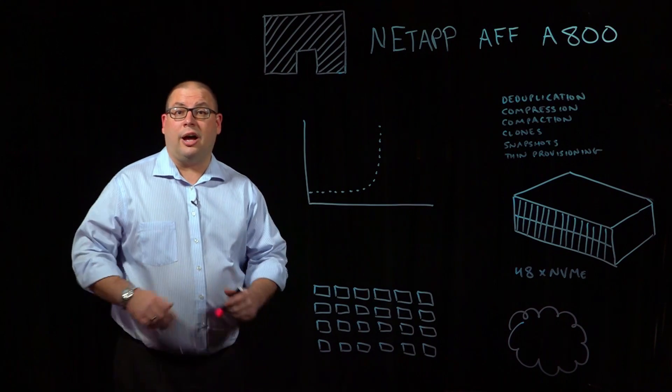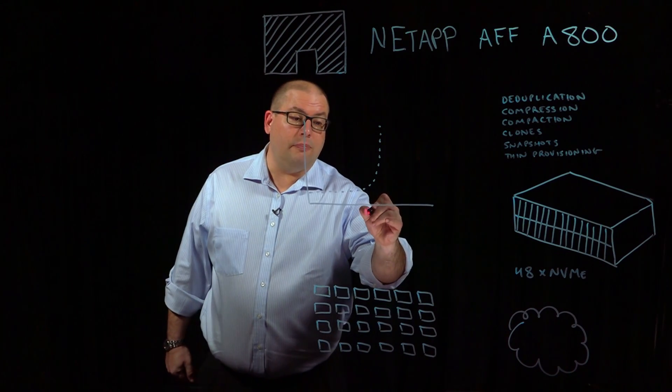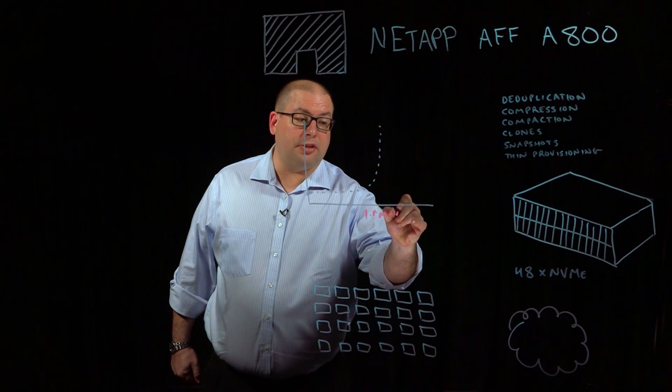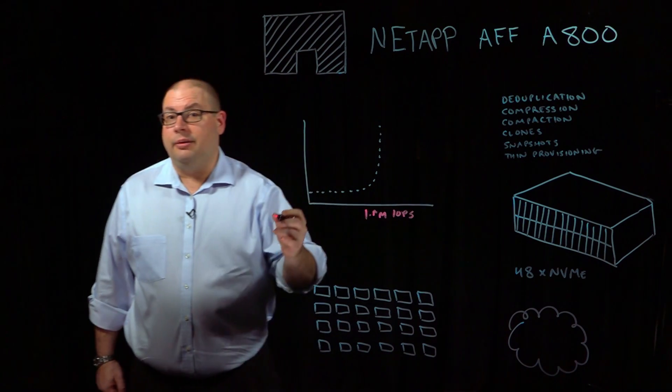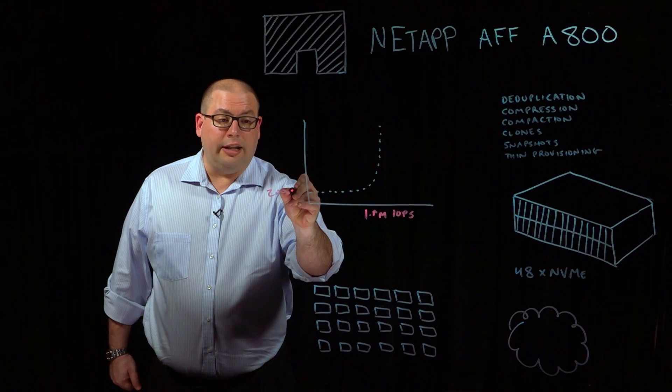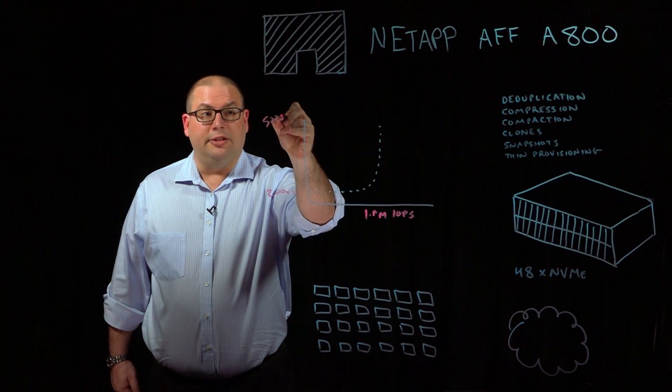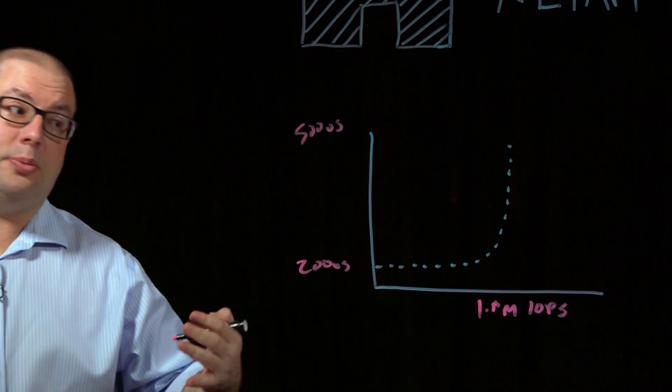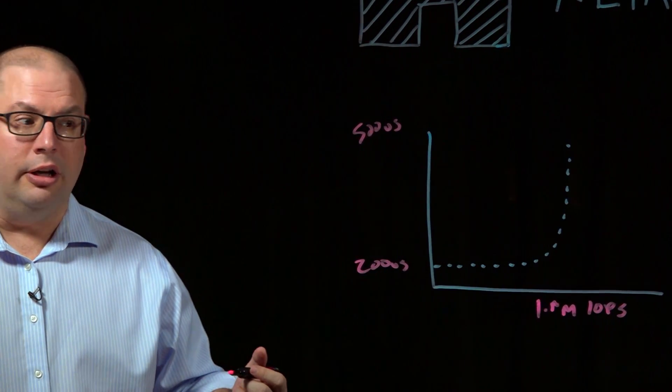From a performance perspective, we're currently driving over 1.1 million IO operations per second. These are 8K fiber channel random reads uncashed, at 200 to 500 microsecond latencies. If you can tolerate a little bit longer latencies, we can actually push beyond that 1.1 million number.